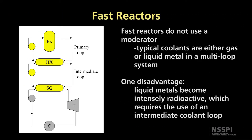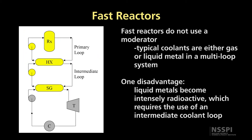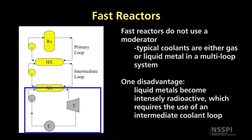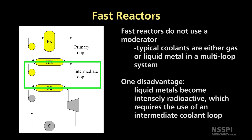The last kind of reactor we're going to talk about is fast reactors. Fast reactor systems are a very complicated and advanced technology, and very few states have developed this type of reactor system. They typically have three loops: a primary loop which flows through the reactor, that goes through a heat exchanger to an intermediate loop, which then goes through a heat exchanger to a third loop. The third loop is the one that actually produces electricity.